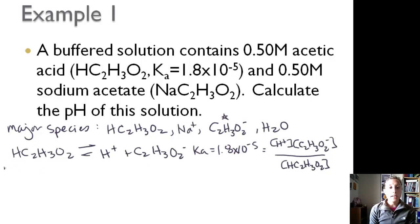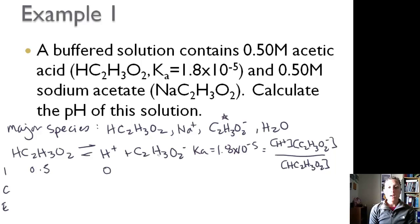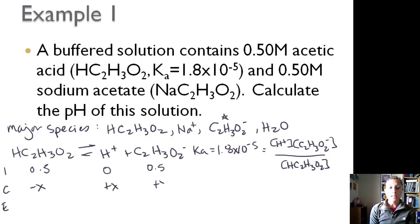Now if we set up an ICE table — this is where it's a little bit different. Initially we're starting with 0.5 molar of the acetic acid and no H⁺. But because the salt is going to completely dissociate and there's 0.5 molar of it, we're going to have 0.5 molar initially of the acetate ion. For change, we have minus X, plus X, plus X, giving us 0.5 minus X, X, and 0.5 plus X.